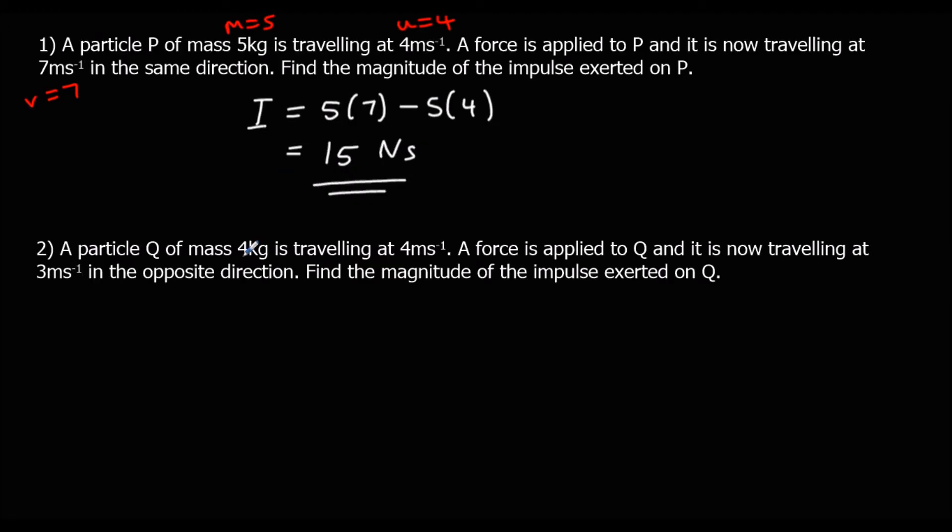Okay, question two. So we've got M is 4 this time. U is 4. The force is applied and it's now traveling at 3 meters per second in the opposite direction. So it's changed direction, so V is negative 3. Find the magnitude of the impulse exerted on Q.